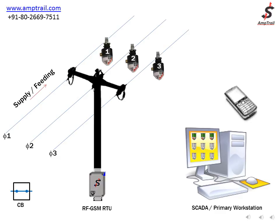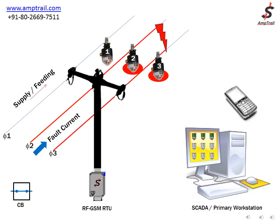Now let us simulate a fault condition — a short circuit condition between phases two and three. As soon as the short circuit occurs, the fault current travels from the source up to the point of short circuit and travels back to the source. FLA3 indicators coming in the path of the fault current trip, thereby indicating a fault. The indicators give a local indication by means of ultra-bright LEDs and a red disc.